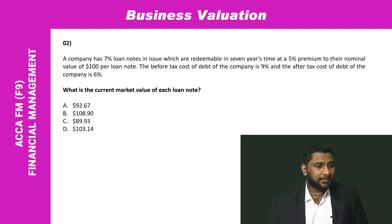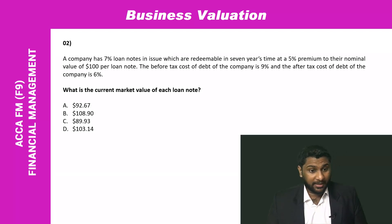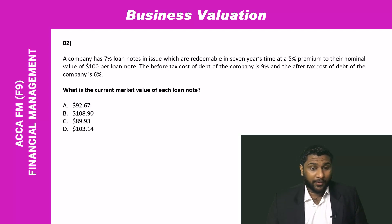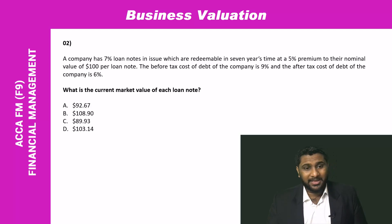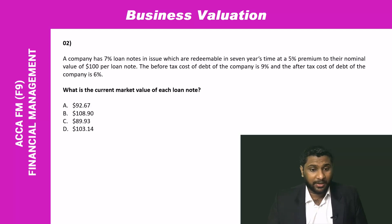A company has 7% loan notes in issue, redeemable in seven years at a premium of 5% over nominal value of £100. The before-tax cost of debt is 9% and the after-tax cost of debt is 6%.